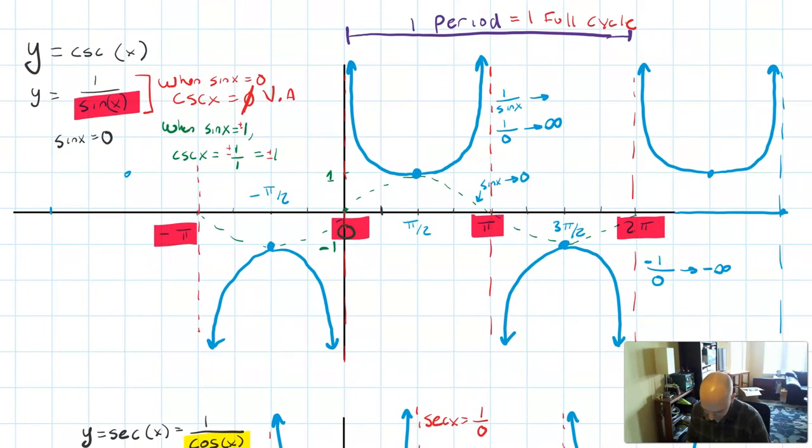This is the cosecant graph from the other video. And what I really want to remember from this is that it's the reciprocal of sine. So it has asymptotes where sine is zero, which is going to happen at zero, π, and 2π. Zero, π, and 2π.